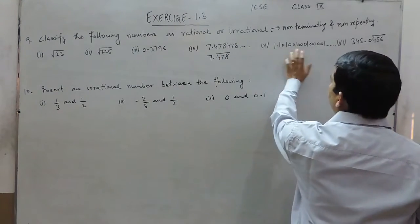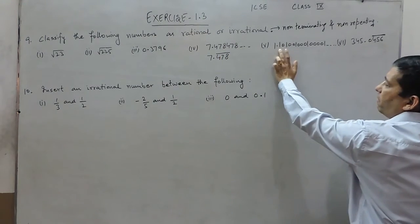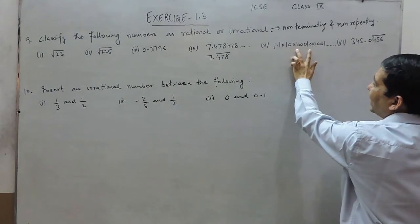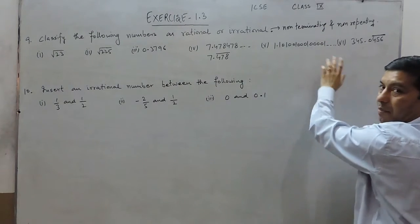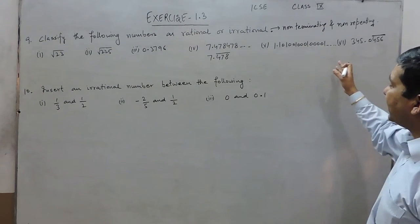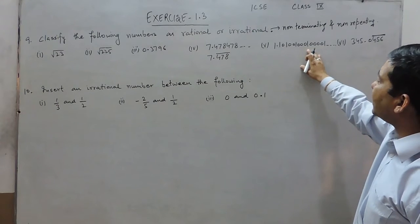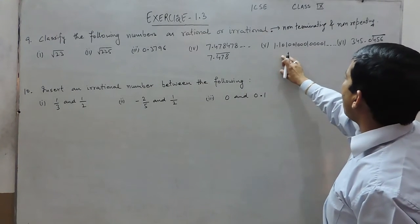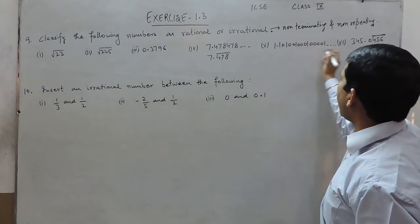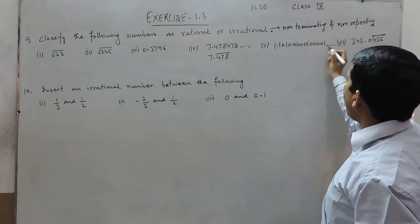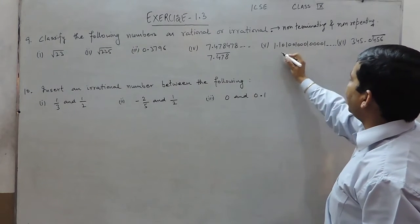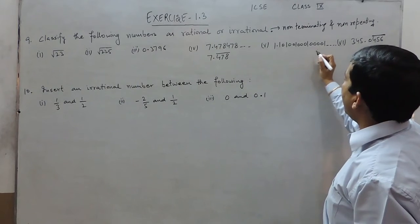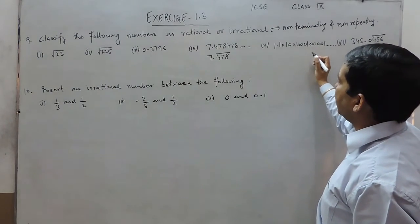In this question, there is one zero, then one with two zeros, then one with three zeros — the number of zeros keeps increasing. So this cannot be said as non-terminating repeating. When there is a dash after this, it means it is a non-terminating decimal, but it is not a repeating decimal.